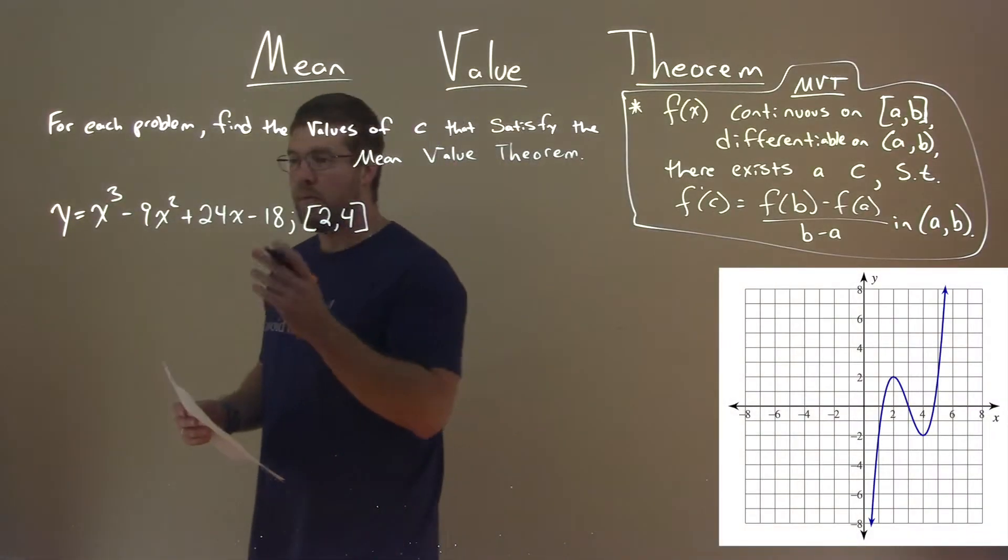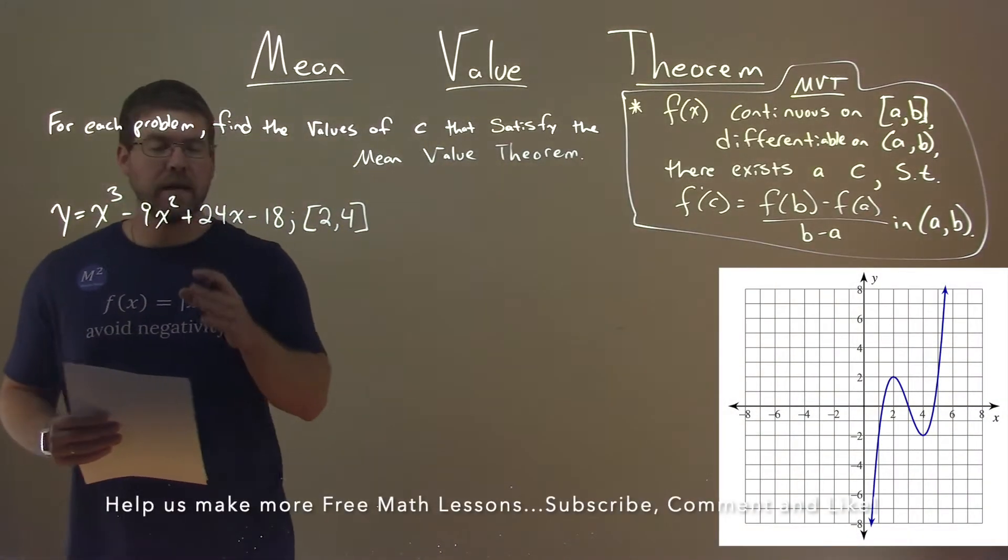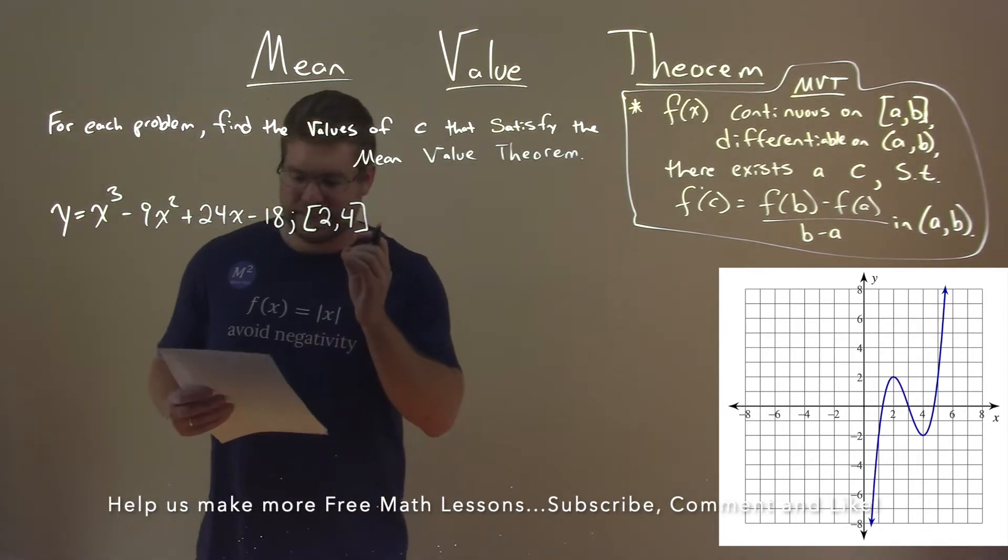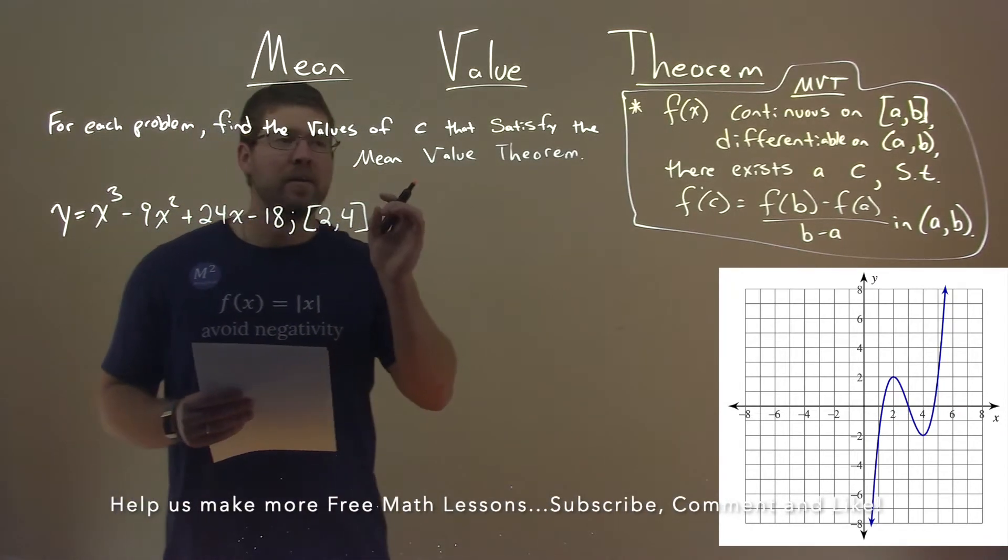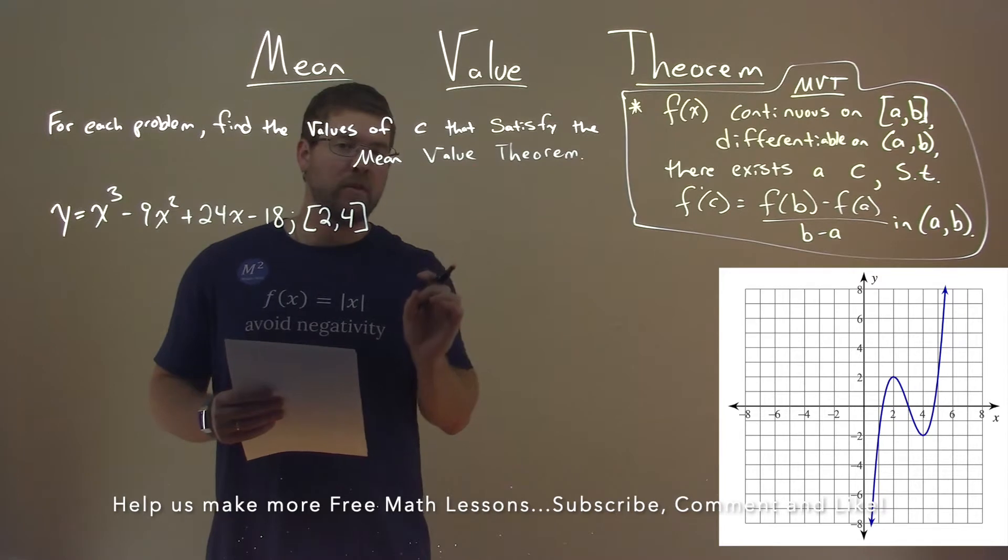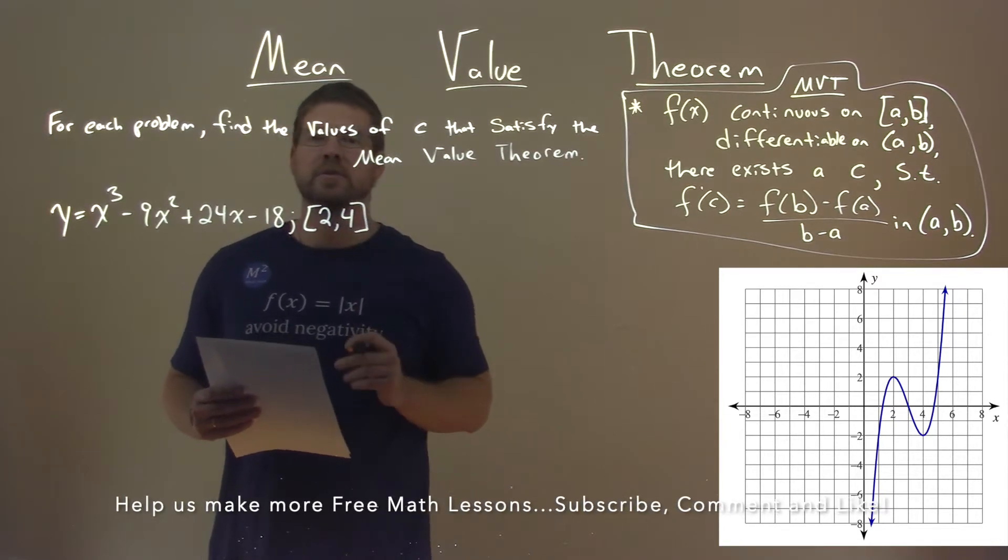We're given this problem right here: y equals x to the third power minus 9x squared plus 24x minus 18, and we have to find the values of c that satisfy the Mean Value Theorem over interval from 2 to 4.